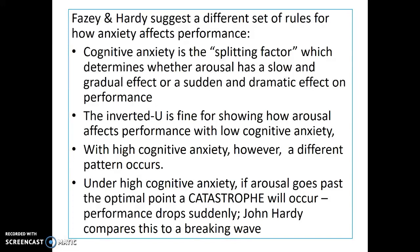What this is saying is, if you have low cognitive anxiety, then the arousal-performance graph will be that of an inverted U shape. So if you're really good at something and it's not causing you much anxiety, maybe like football, then your performance might follow that graph. However, under high cognitive anxiety, if arousal goes past the optimal point, a catastrophe will occur — performance drops suddenly. John Hardy compares this to a breaking wave.